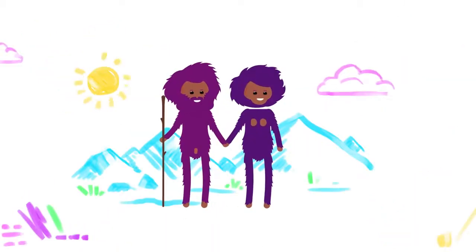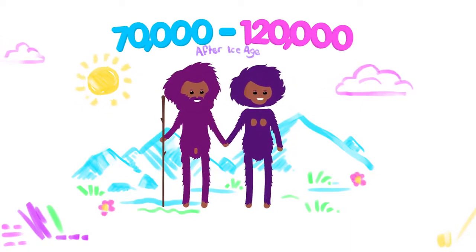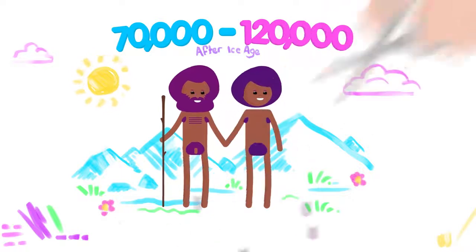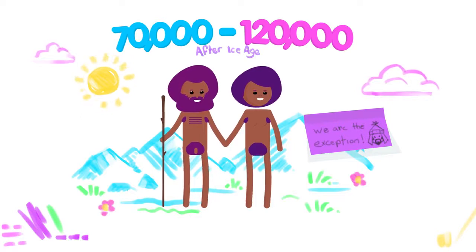Humans lost most of their thick body hair around 70,000 to 120,000 years after the last ice age. But despite becoming mostly bare, we retained plentiful hair in our armpits and crotches, becoming the only mammalian species in the world to have long, coarse pubic hair.